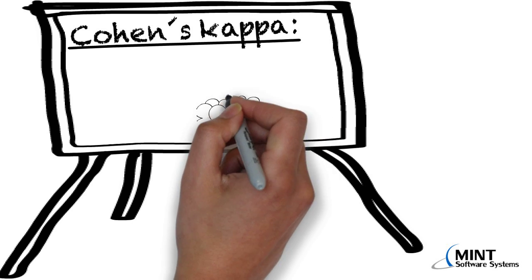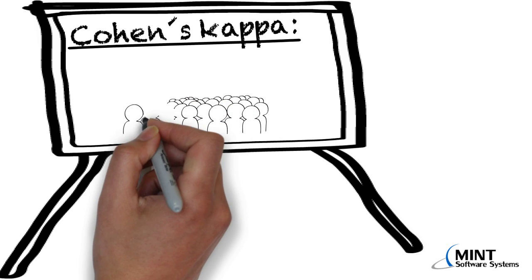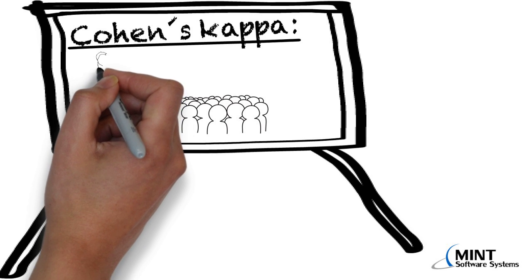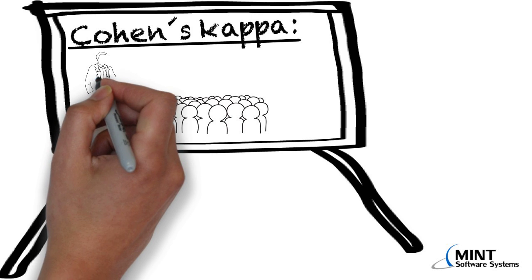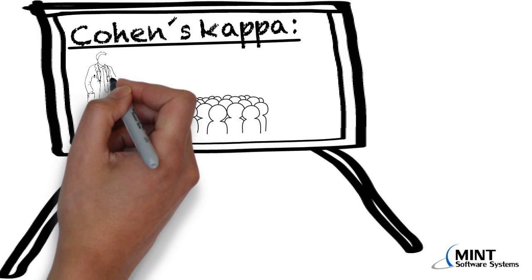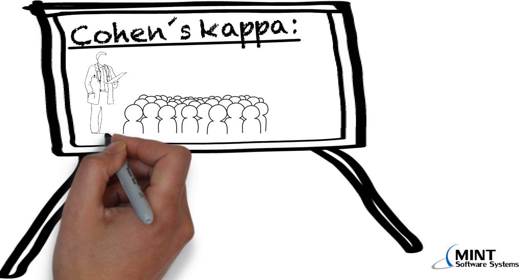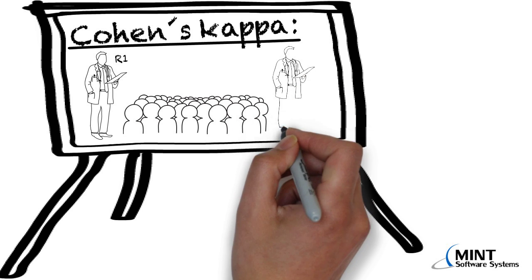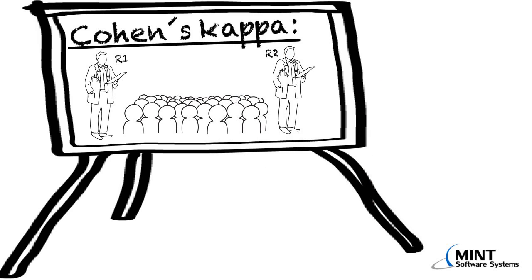Now what does that mean? Let's suppose we have a bunch of people, and two raters have to find out whether each individual in this group is able to perform his job or not. The rater here can be a doctor, a psychologist, or an instructor. This is rater number one, and we also have rater number two. Two raters have to evaluate this group independently and find out whether each individual is able to perform the job.